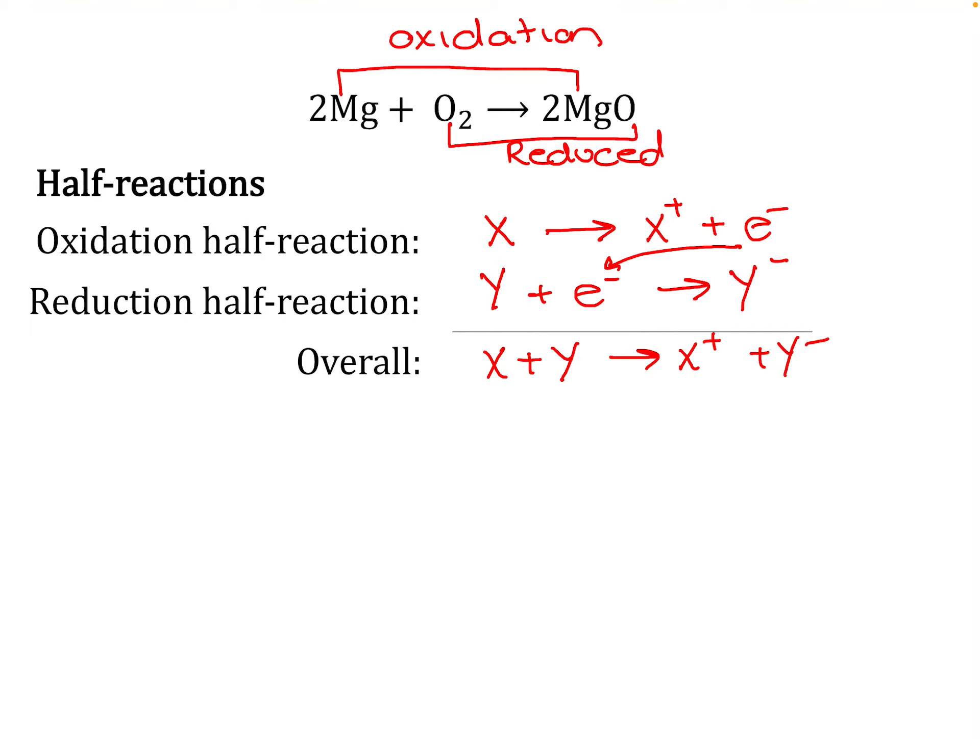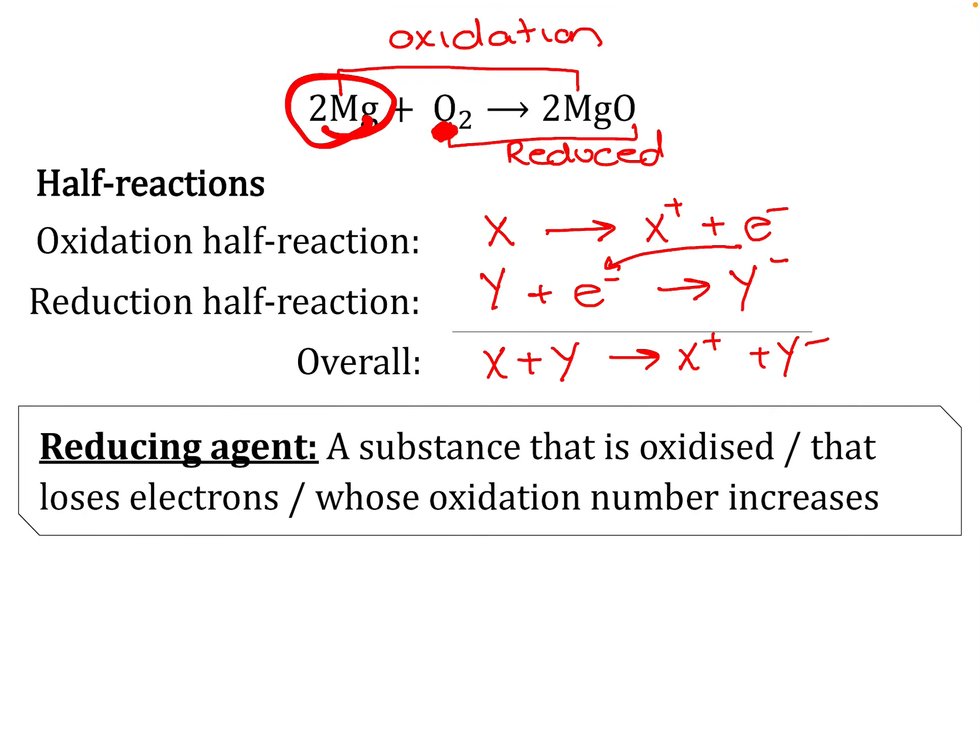We have to add in an extra definition. The magnesium was oxidized, the oxygen was reduced. Now the reducing agent, that's what magnesium is, is a substance that is oxidized. It gives away its electrons, so it causes something else to be reduced. These are three different definitions, so you need to be careful. If I ask for the reducing agent in terms of electrons, you have to tell me it's a substance that loses electrons. If I ask it in terms of oxidation numbers, which we're going to do in the next video, you have to tell me the oxidation number increases. If I don't specify, you can give me any.